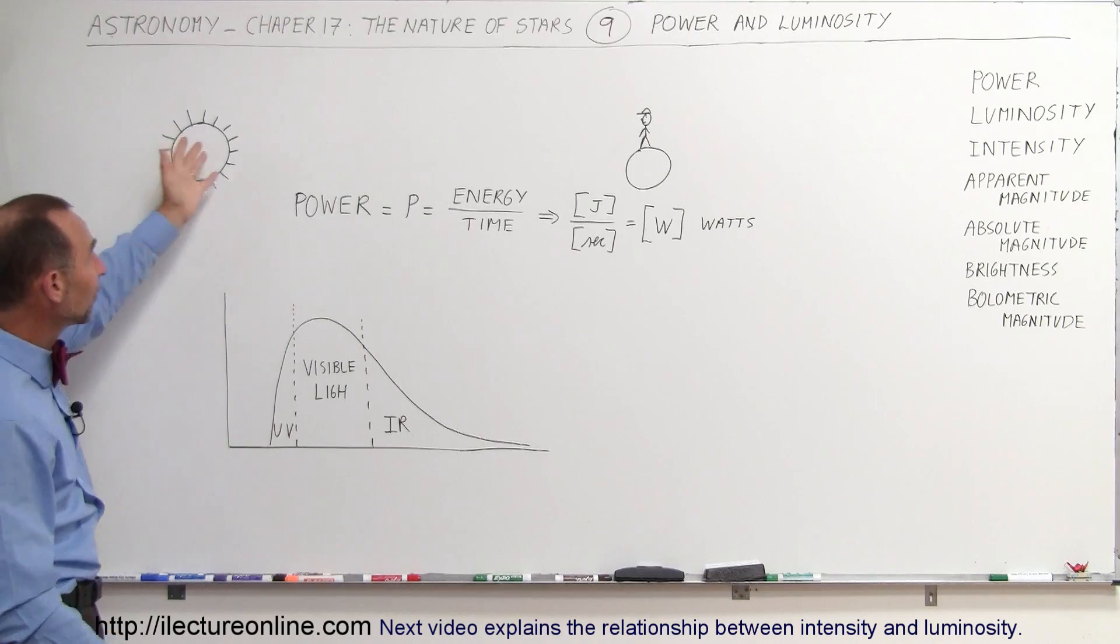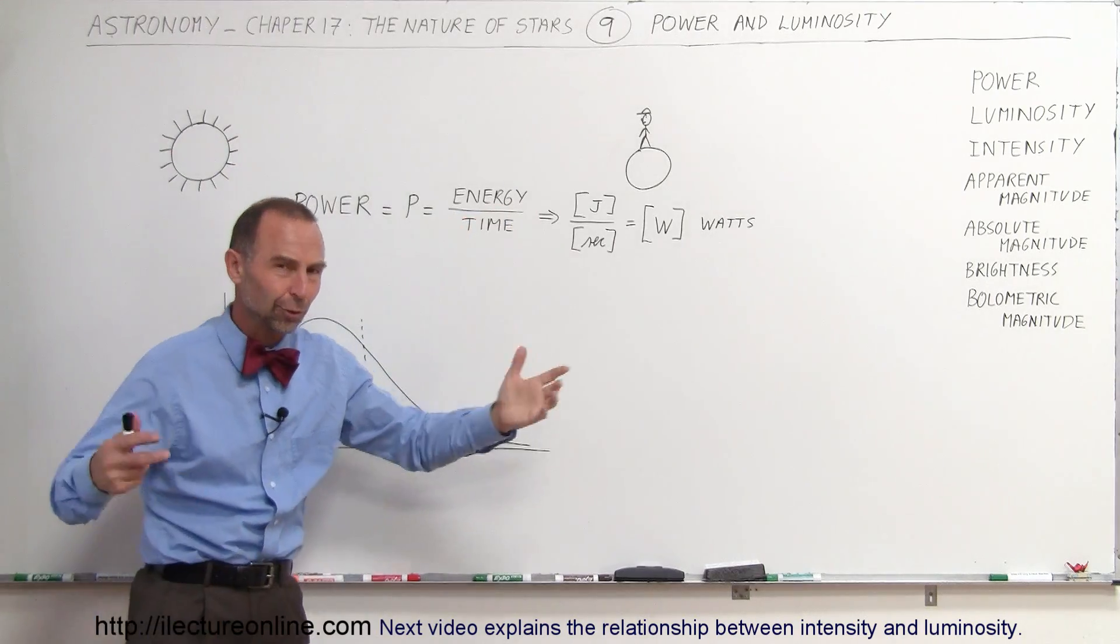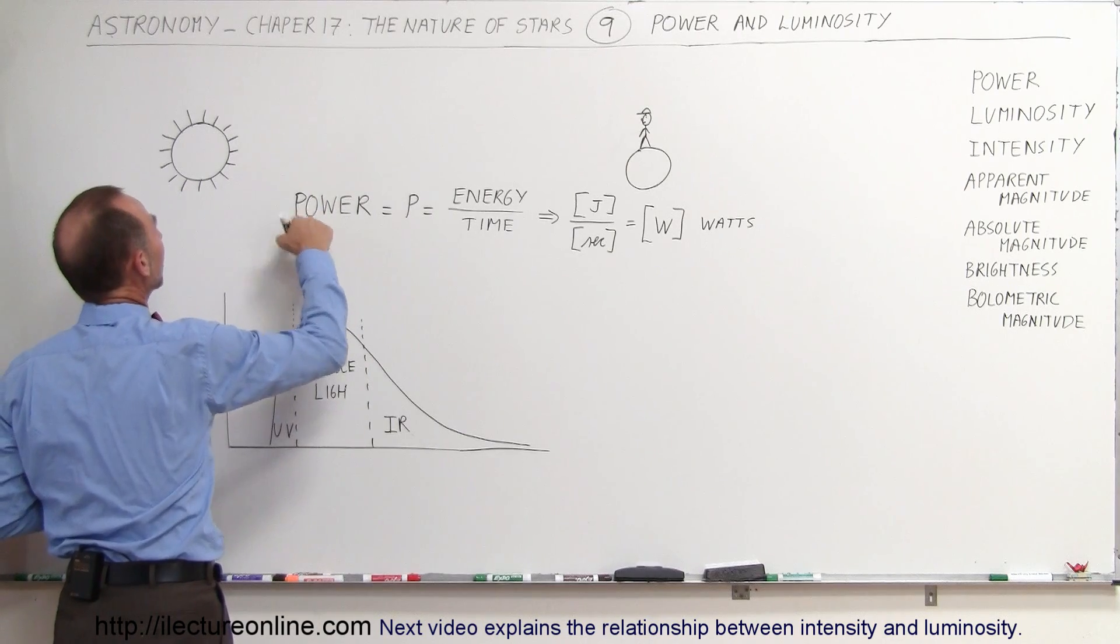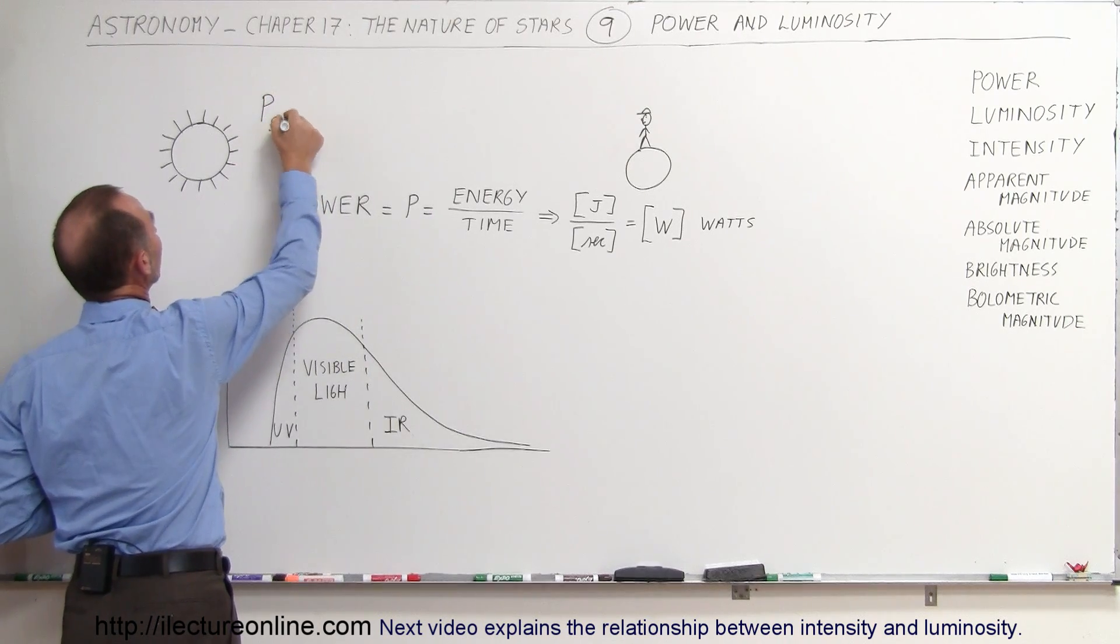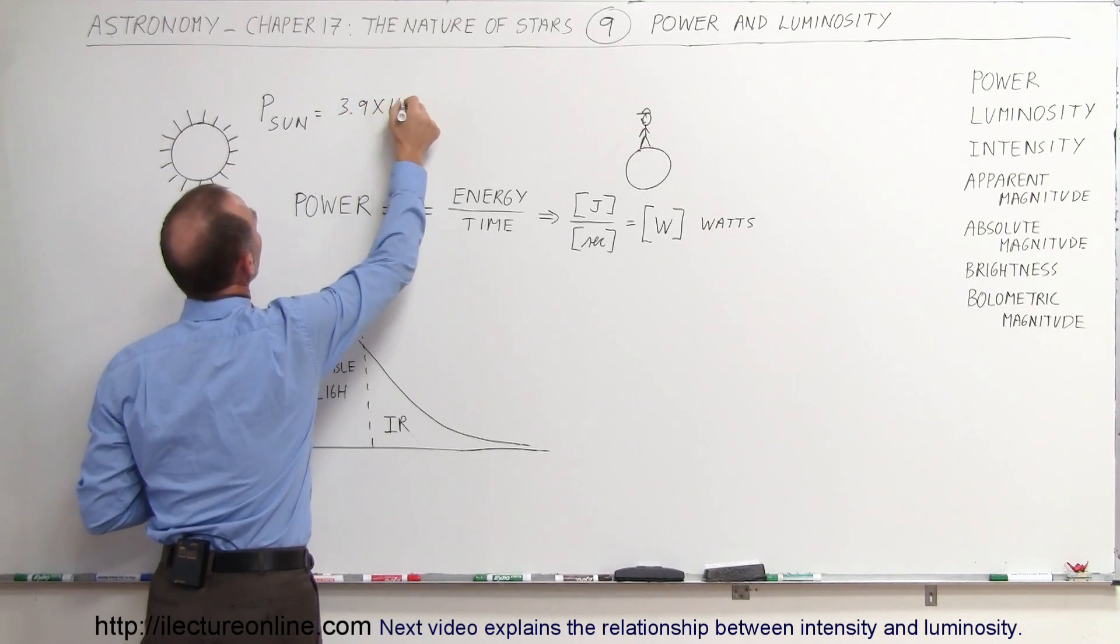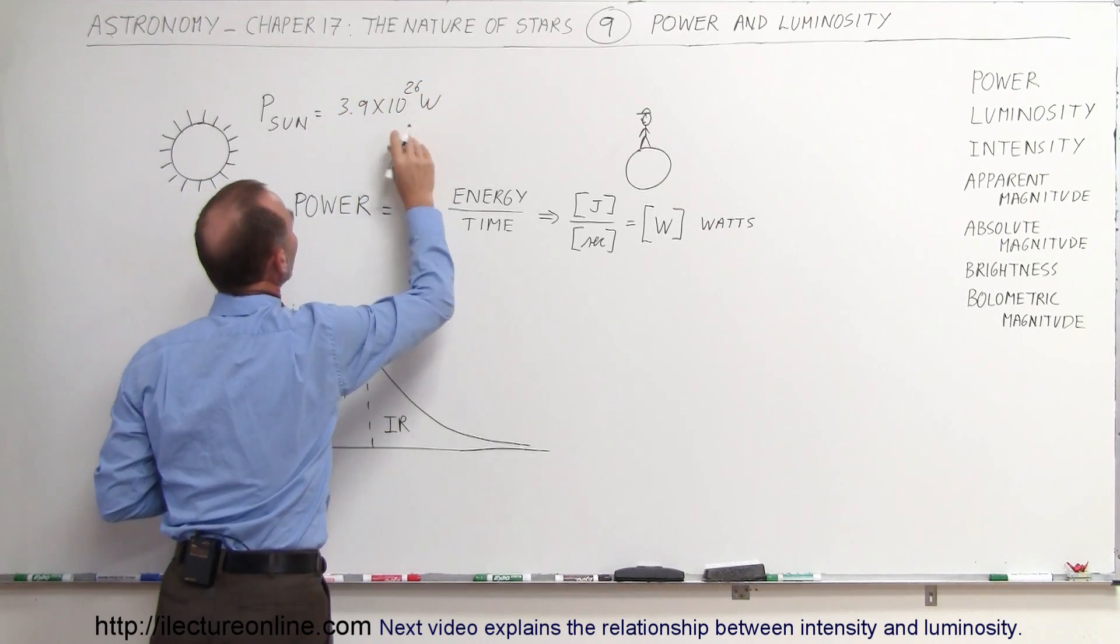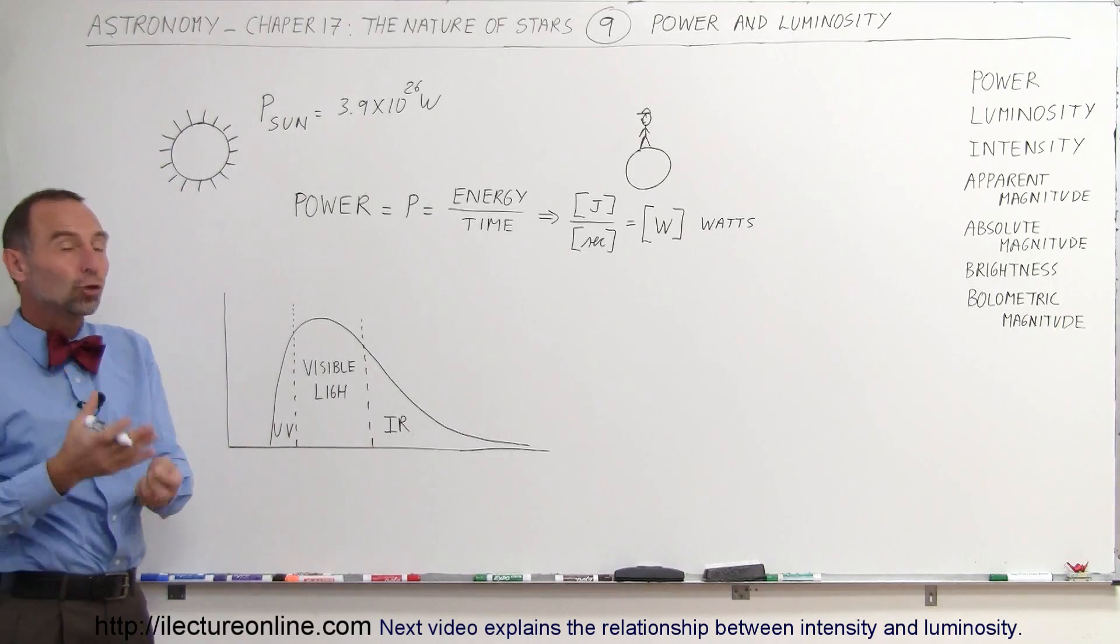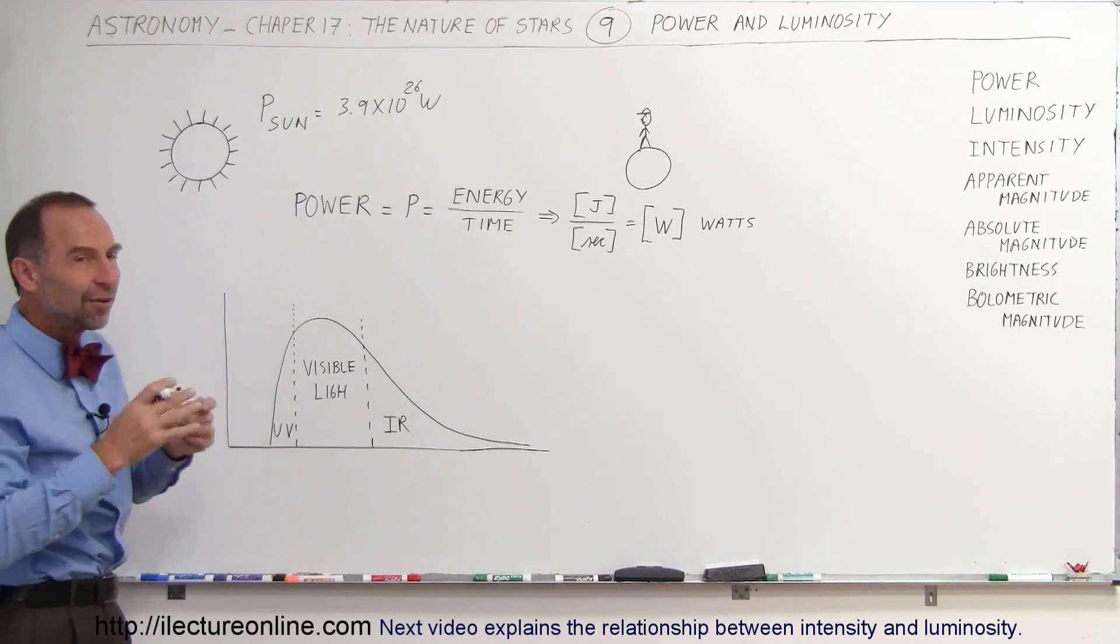And so the power output of something is how much energy something puts out in terms of watts. And so when we have the Sun giving off the energy towards the Earth, and of course all of the space around the Sun, we can say that the power of the Sun is equal to 3.9 times 10 to the 26 watts. That's how much energy the Sun puts out.